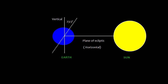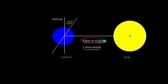Now let us talk about the tilt of the earth. The earth is tilted about 23.5 degrees from vertical. To determine vertical, we need to define horizontal, and horizontal is the plane of ecliptic. The center of the sun and the center of the earth lie in the same plane. In fact, all the planets except Pluto lie in the same plane, and that plane is called the plane of ecliptic. The plane of ecliptic and the earth's axis make an angle of 66.5 degrees — this is approximate.